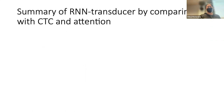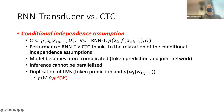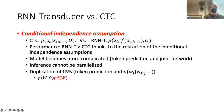Let's revisit the summary of the RNN Transducer, comparing it with CTC and attention. The RNN Transducer and CTC have a significant difference stemming from the conditional independence assumption, which makes RNN Transducer perform better in terms of word error rate, although CTC has simplicity — so there are pros and cons. The output quality is also different.